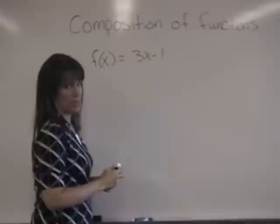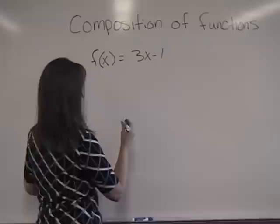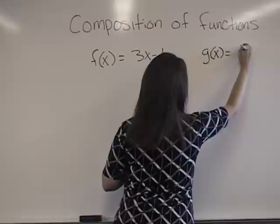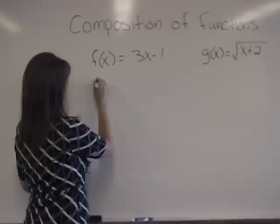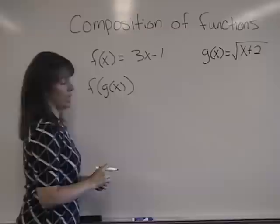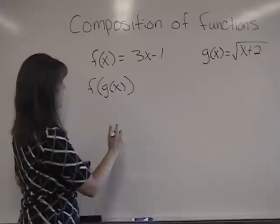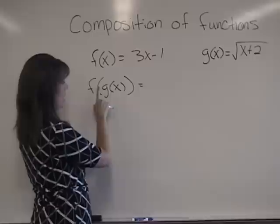With composition of functions you need two functions usually. Now I'm going to give you g of x equals the square root of x plus 2. And to begin with, we're going to compose the function f of x with the function g of x. This is called composition.